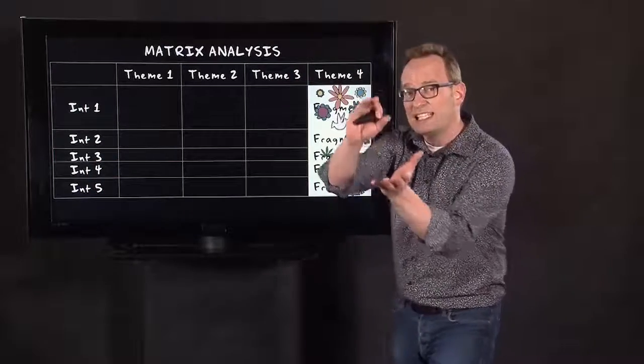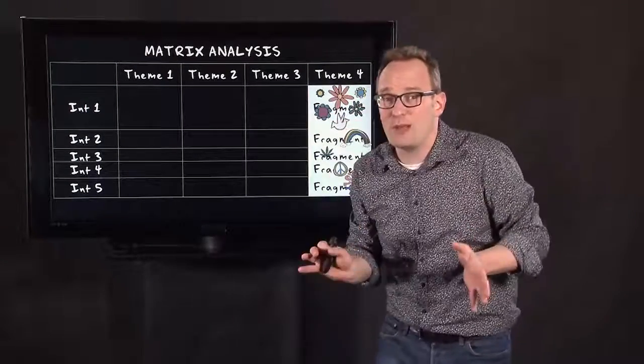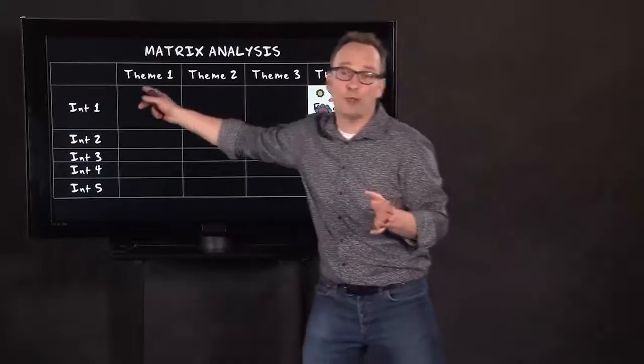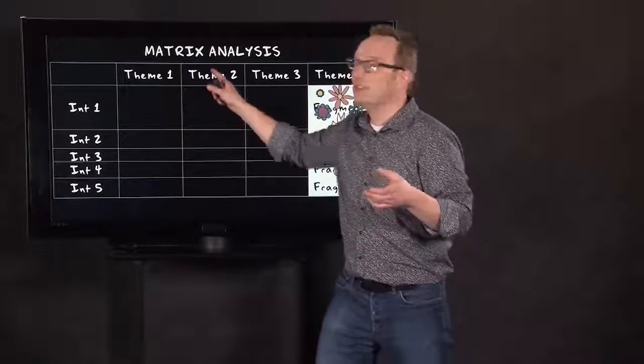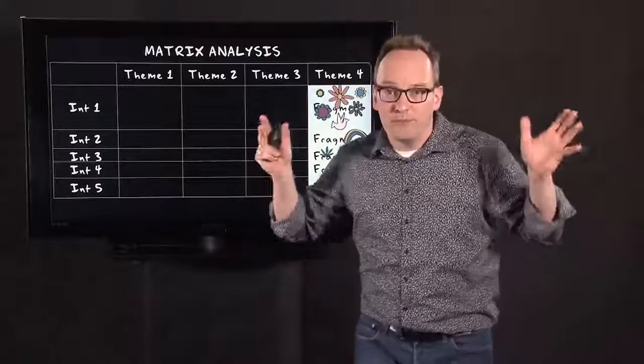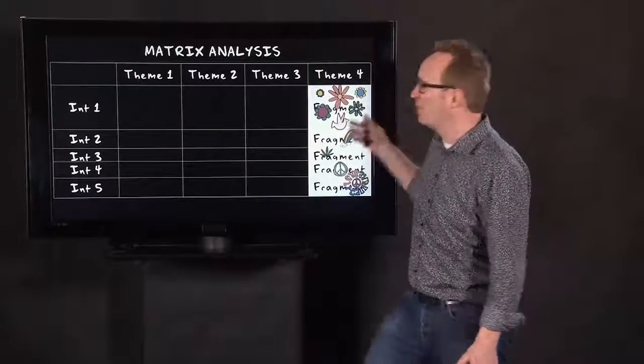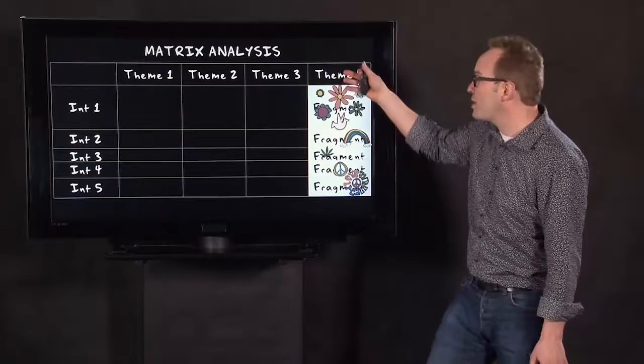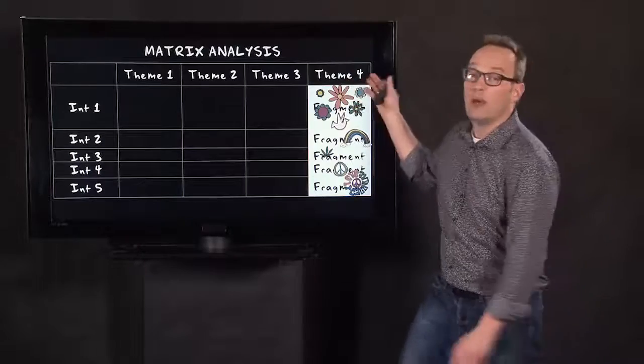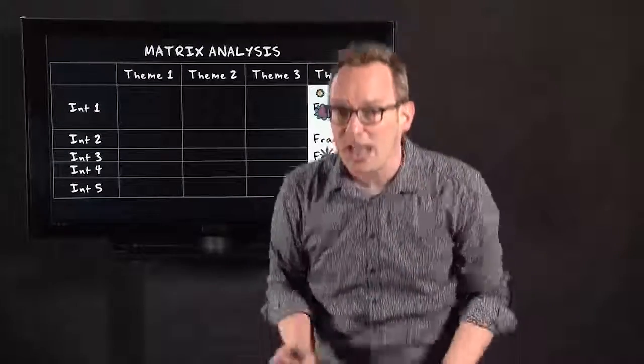Now what you do then is you cut and paste the fragments in this matrix, and it works tremendously well because what you can do now is look at a single interview and see what people say on theme one, on gender, on any other topic, on theme four, the meaning of flower power to them. And then you can compare this interview with this interview, and you can compare within a column and within a case and a column. So you can combine cases and columns.